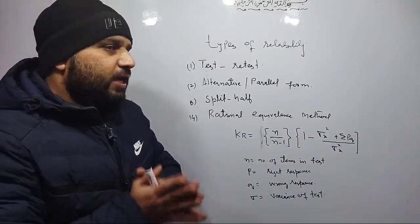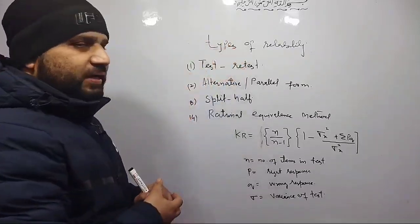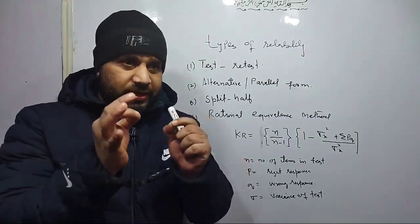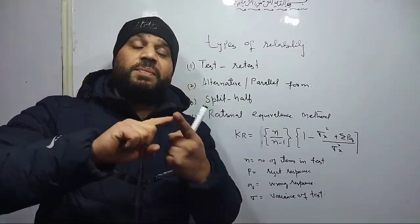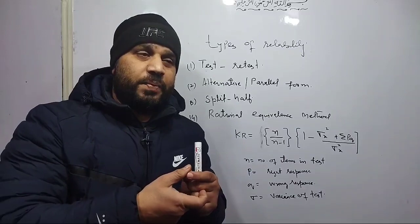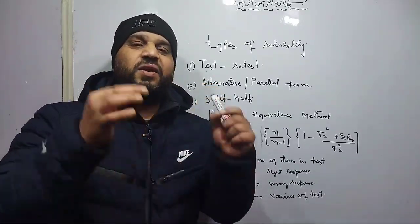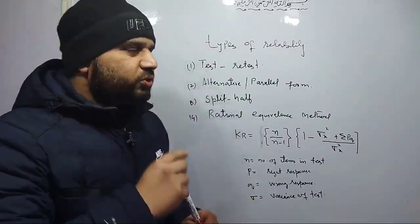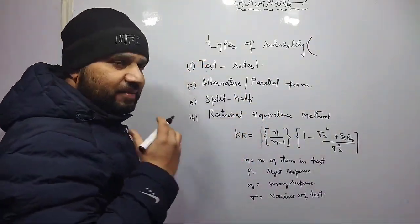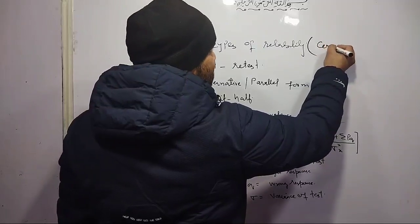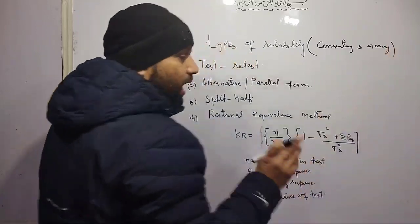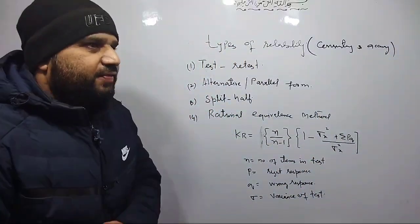Now when we talk about types of reliability, we have already said that a test is reliable when you administer it repeatedly on someone and your score consistently and accurately comes out the same. So two things to always remember when we talk about reliability: one must remember it is consistency and accuracy.